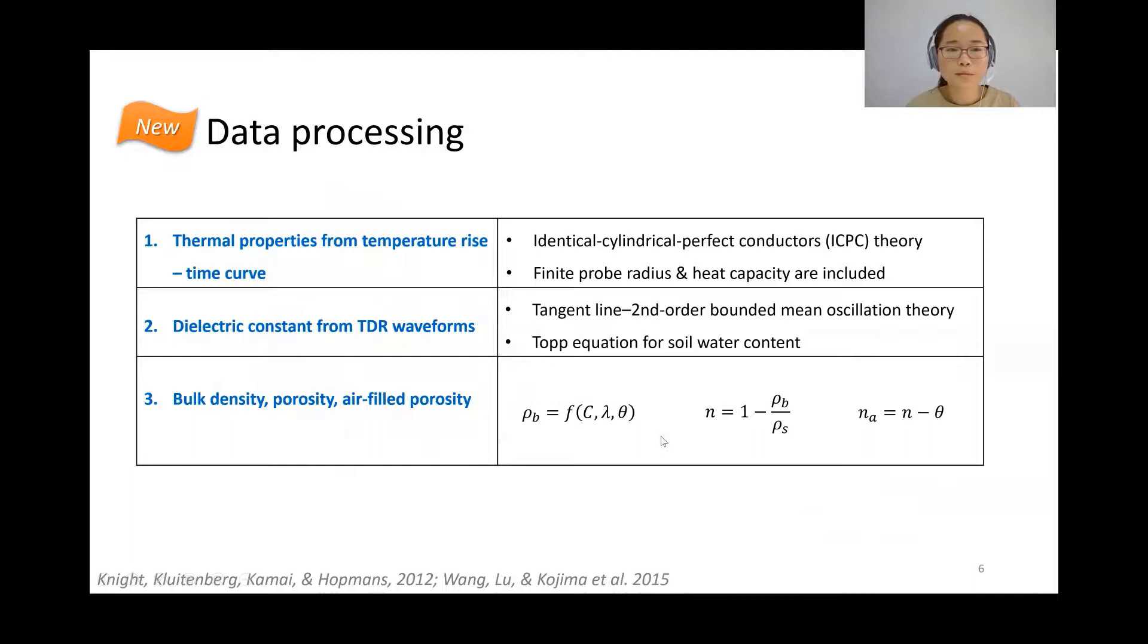We update the data processing algorithms by estimating thermal properties from temperature measurements using the ICPC theory here, which accounts for finite probe radius and heat capacity. And we improve by estimating the dielectric constant from TDR waveforms by integrating bounded mean oscillation theory into our calculations.